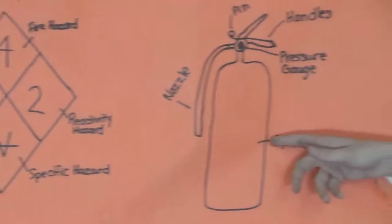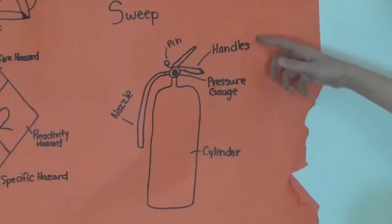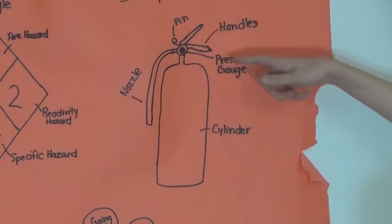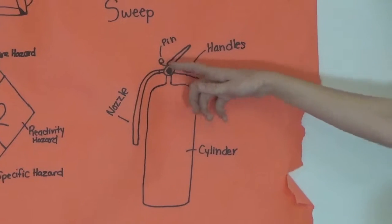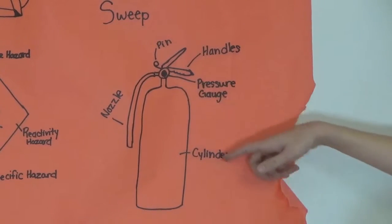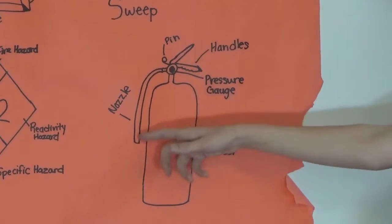This is the parts of the fire extinguisher. These are the handles, and that's the pin, the pressure gauge, the cylinder, and the nozzle.